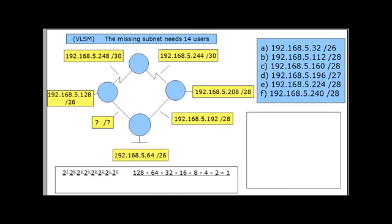This tutorial is about solving a variable length subnet mask problem for the Cisco CCNA. This example is one of the harder types of problems you're going to find on the Cisco CCNA that relates to variable length subnet masks, or VLSM.